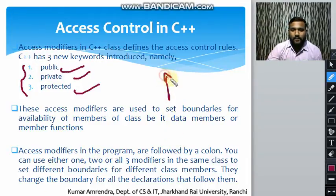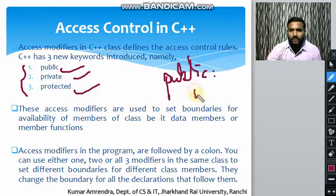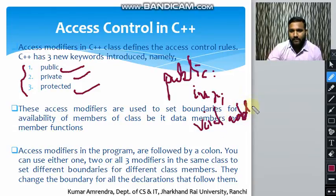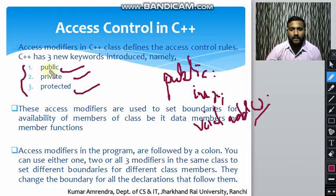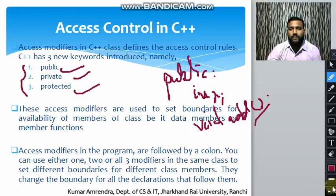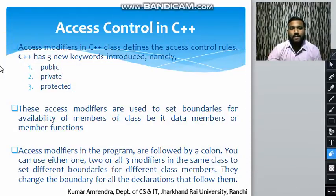Access modifiers in the program are followed by a colon — for example, 'public:' followed by int x or void add as a member function. You can use one, two, or all three modifiers in the same class to set boundaries, so we can use all three access specifiers inside a single class.